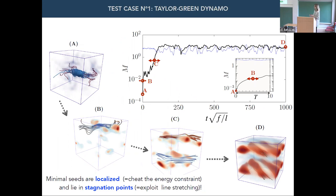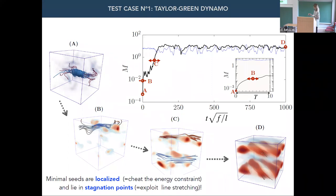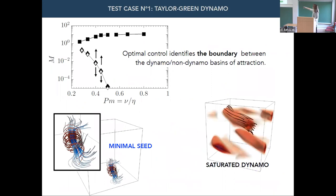The seed exploits strong local stretching, which translates into a very strong early amplification of the magnetic energy — increasing by almost four orders of magnitude from this minimal seed. The key features I want to emphasize are: these minimal seeds are localized so that all the energy budget is spent in the most efficient way, and they lie at stagnation points where amplification is maximum. This is very reminiscent of what people doing minimal seed identification for turbulence have been seeing. We did this for several Pm values and described the width of the basin of attraction for the dynamo solution.